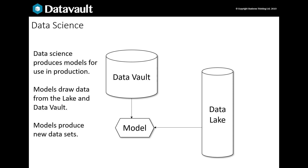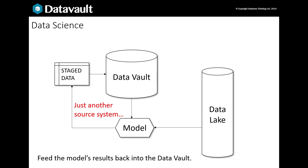Another use for the Business Vault is storing the results of data science. A data scientist may have run experiments, found something useful for the business, built a model and deployed it into production. The model takes data from a data lake and from the data vault and produces new data. The model is just another source system as far as the data vault is concerned, so we feed the results into a staging layer and load them back into the vault as normal.